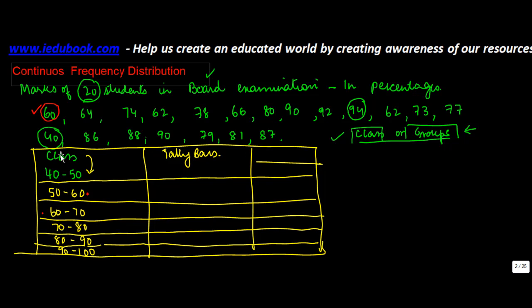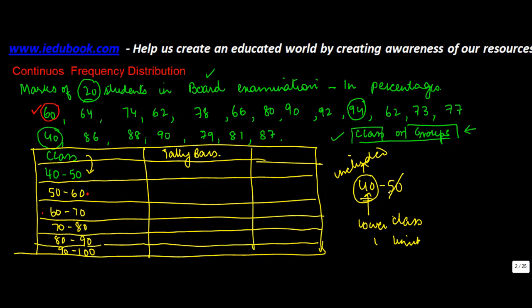So when you take a particular class, let's say for example you take 40 to 50, then only the numbers which start with the first part which is known as the lower class or lower limit, this is included and this is excluded. Right?